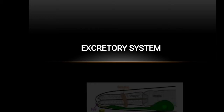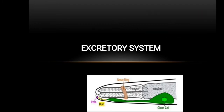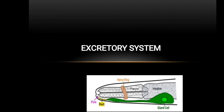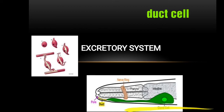Let's see about the components of the excretory system. There are four different cell types. The first one is a pair of gland cells — it is actually H-shaped and the secretion is a hormone that helps in molting. Next is the canal cell, which is actually an excretory cell having an H-shaped body, forming a bridge between the left and right excretory canals.